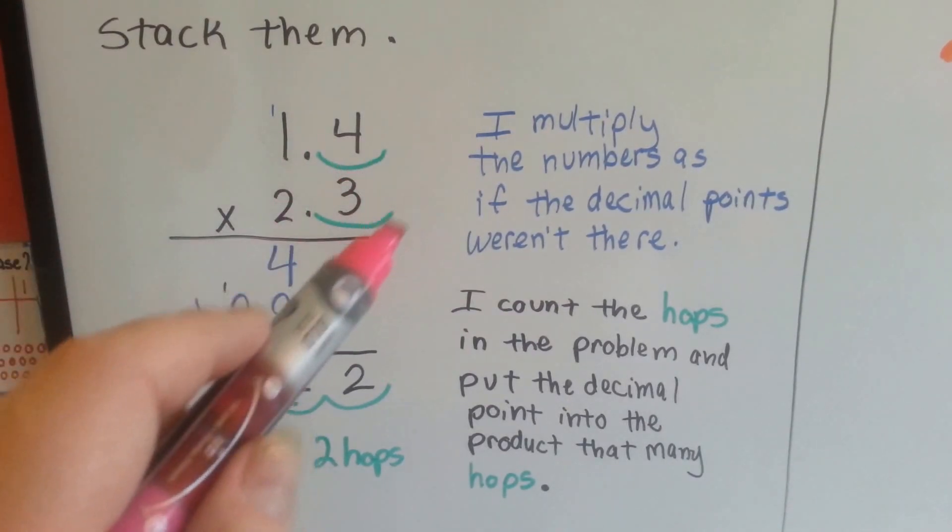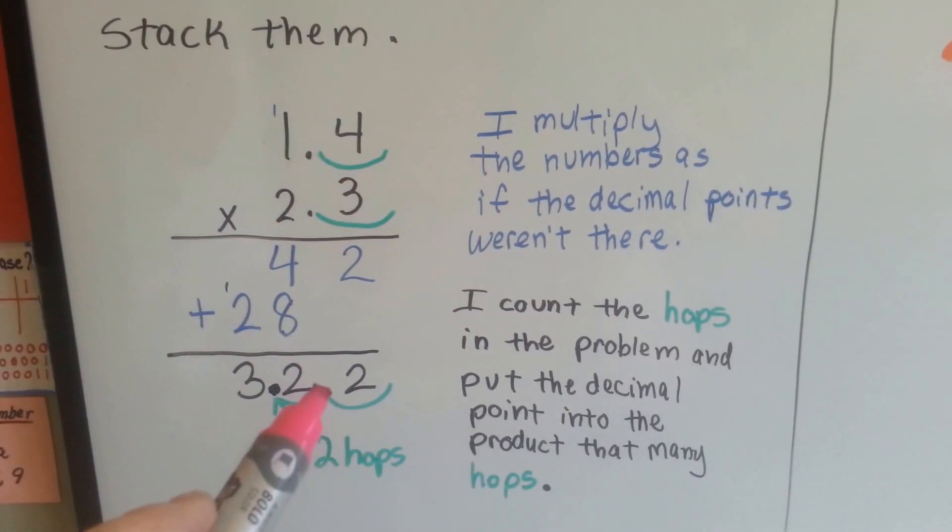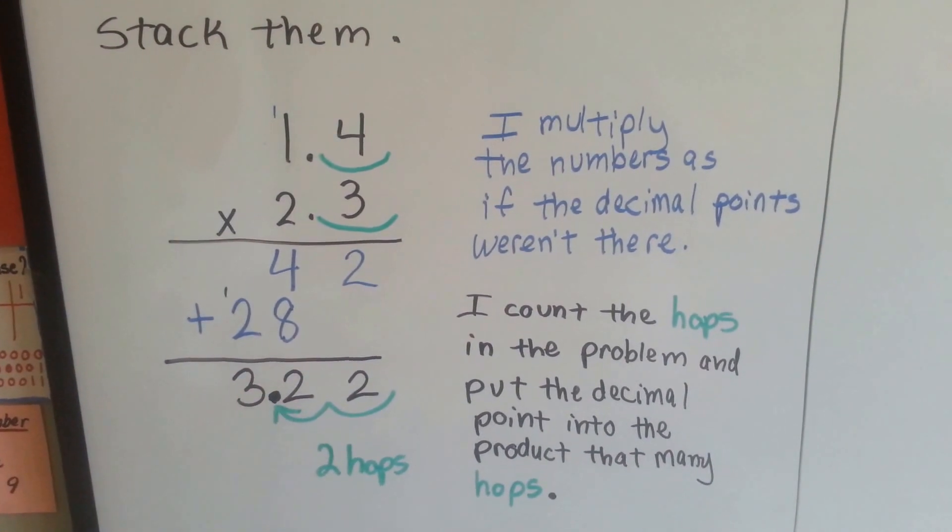See? 1 hop, 2 hops, 1 hop, 2 hops. We know it's 3 and 22 hundredths.